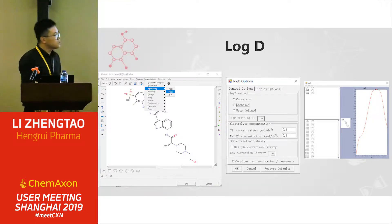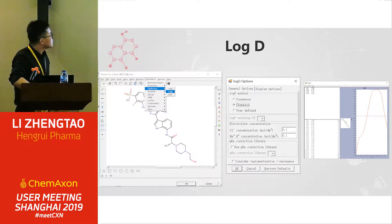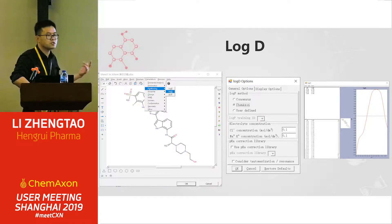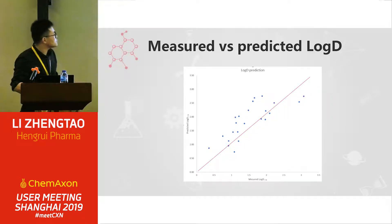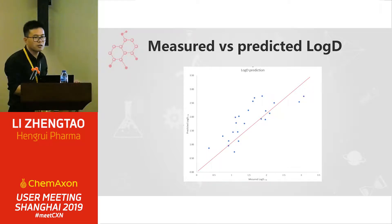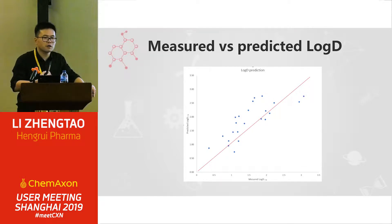The other thing we use is logD. We don't want to use the logD in a narrow range — we want to monitor the logD and keep it within a desired range. We also use logD as a filter tool. Now we have a lot of compounds, and we set it up as a filter tool. This is the search and research function. I think this is really good.